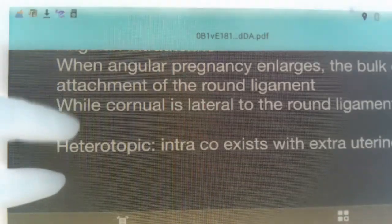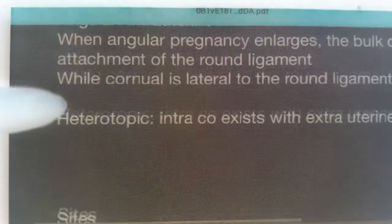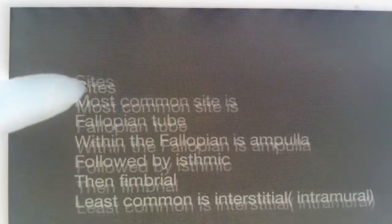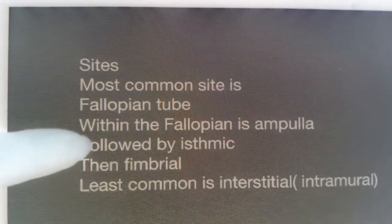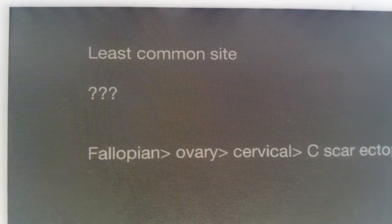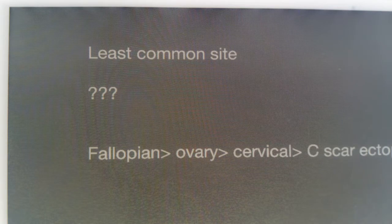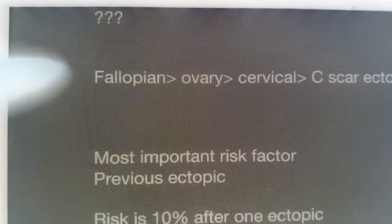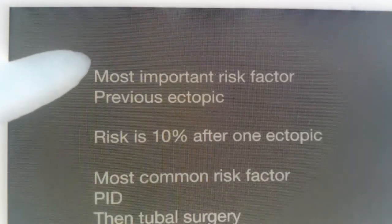The most common site for ectopic pregnancy is the fallopian tube. Within the fallopian tube, the most common site is the ampulla, followed by the isthmus, and then the fimbrial end. After the fallopian tube, other common sites are the ovary, then the cervix, and then the cesarean section scar ectopic — which is the least common.